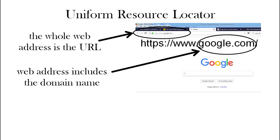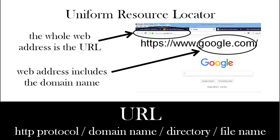So the URL consists of the beginning bit — the HTTP or HTTPS, which is a protocol. Then we have the domain name. At the end we have the name of the file, and if that's in a folder or directory, that will come before the file name. So we have: the protocol (HTTP or HTTPS), the domain name, the directory, and the file name.